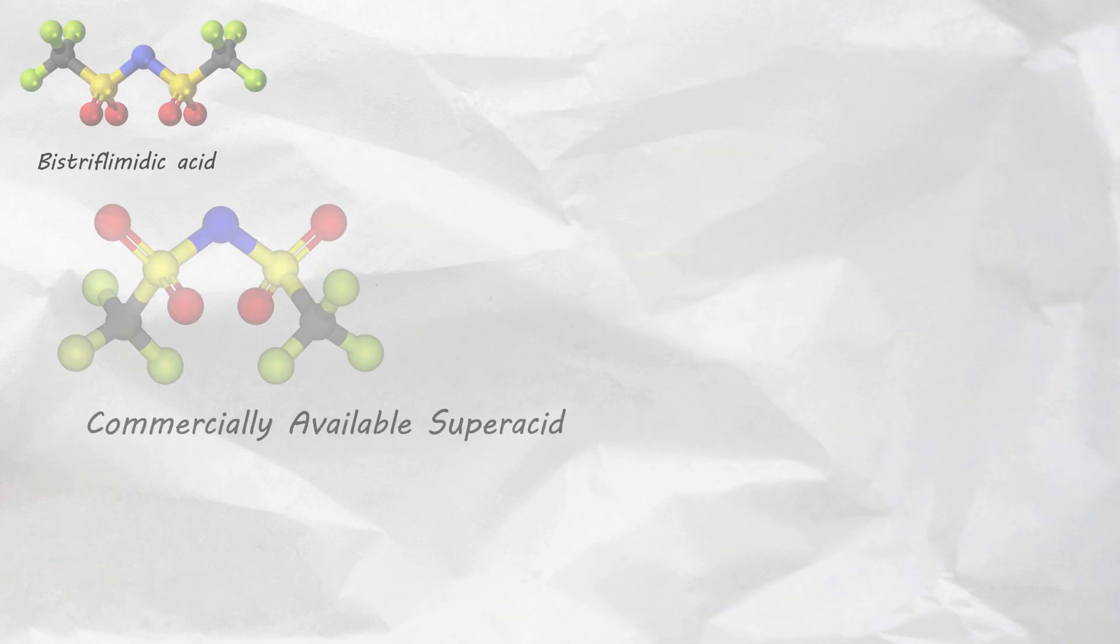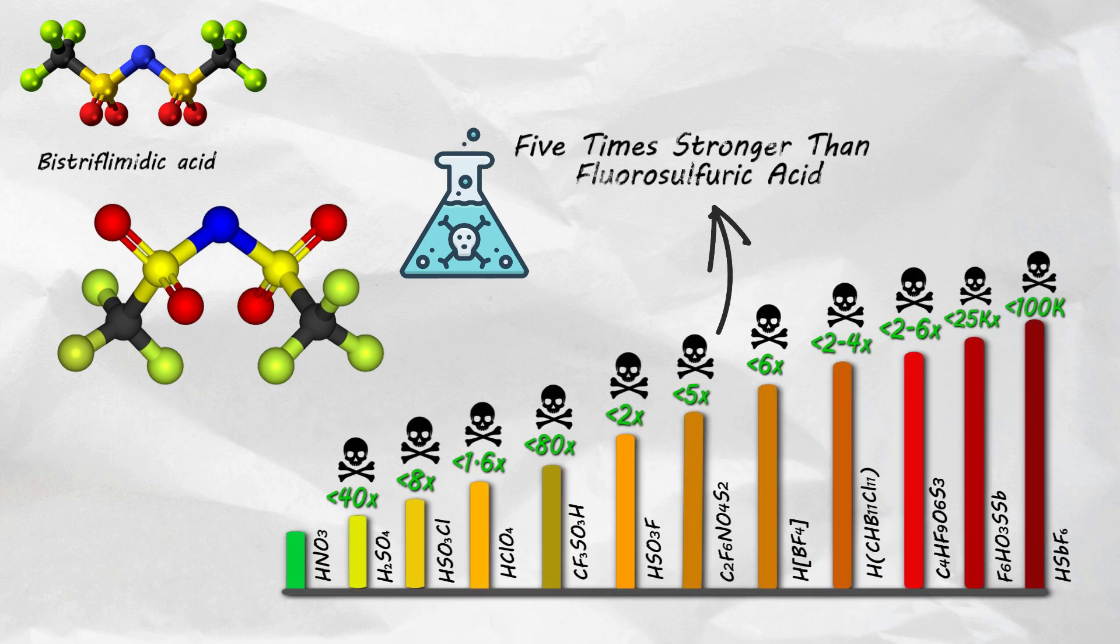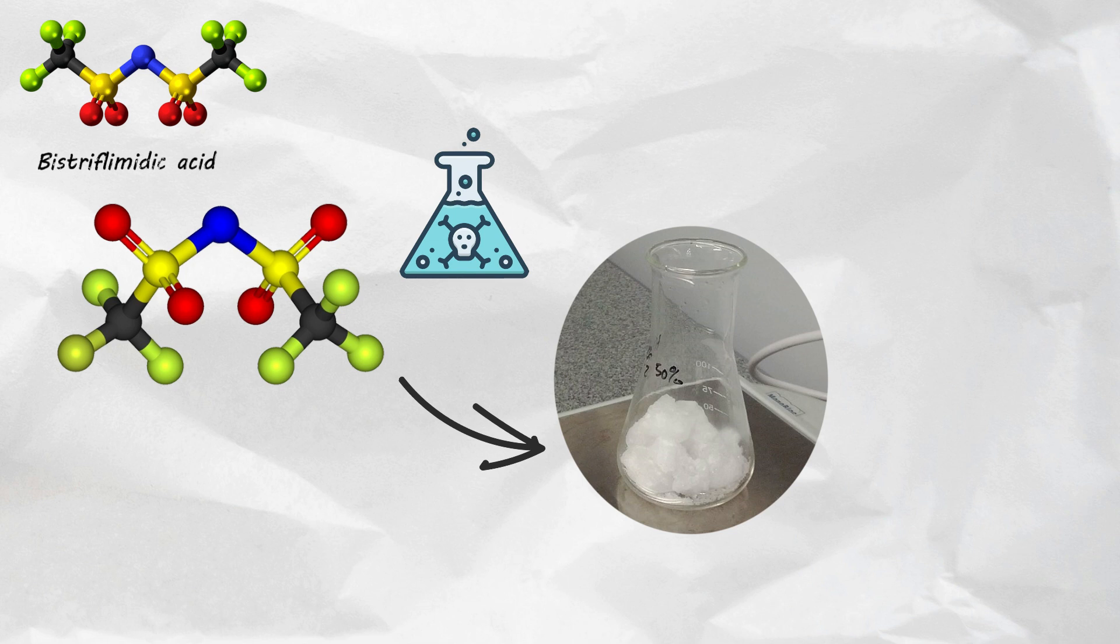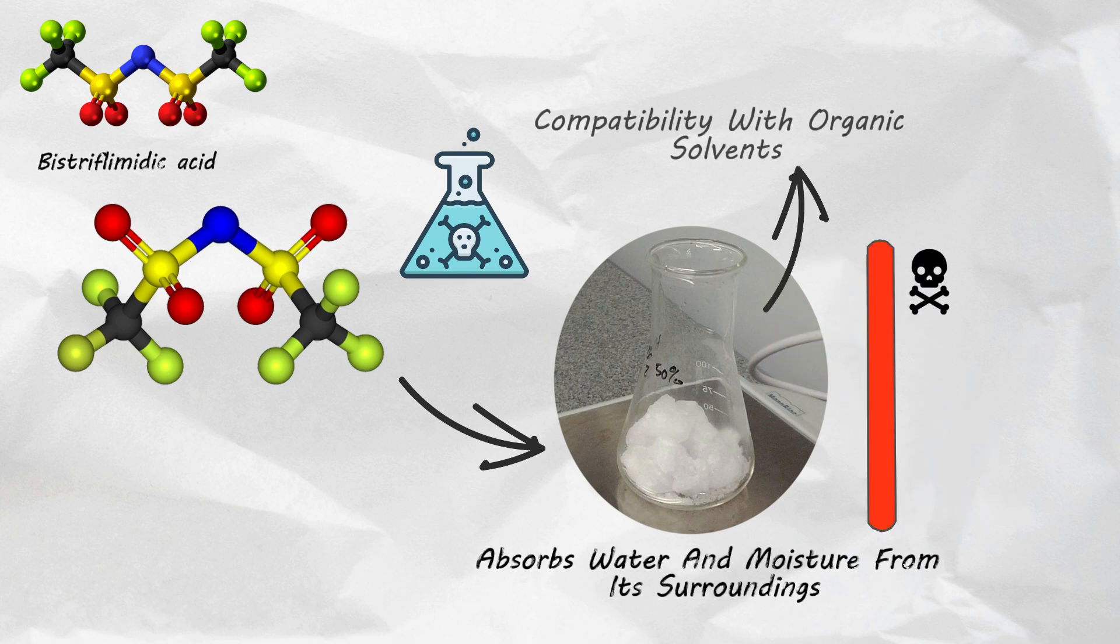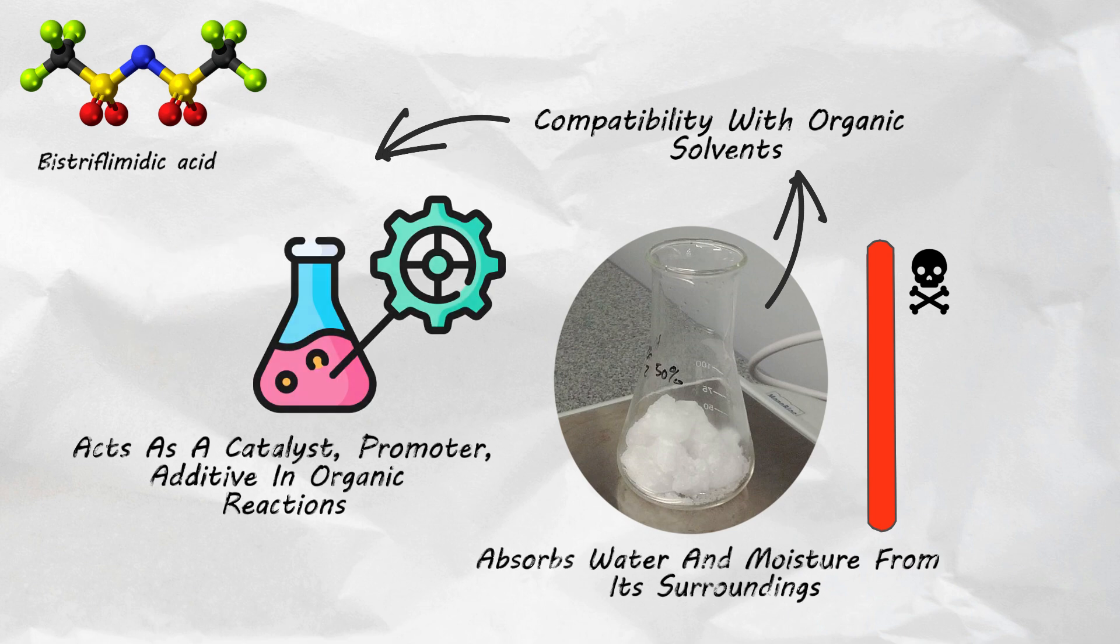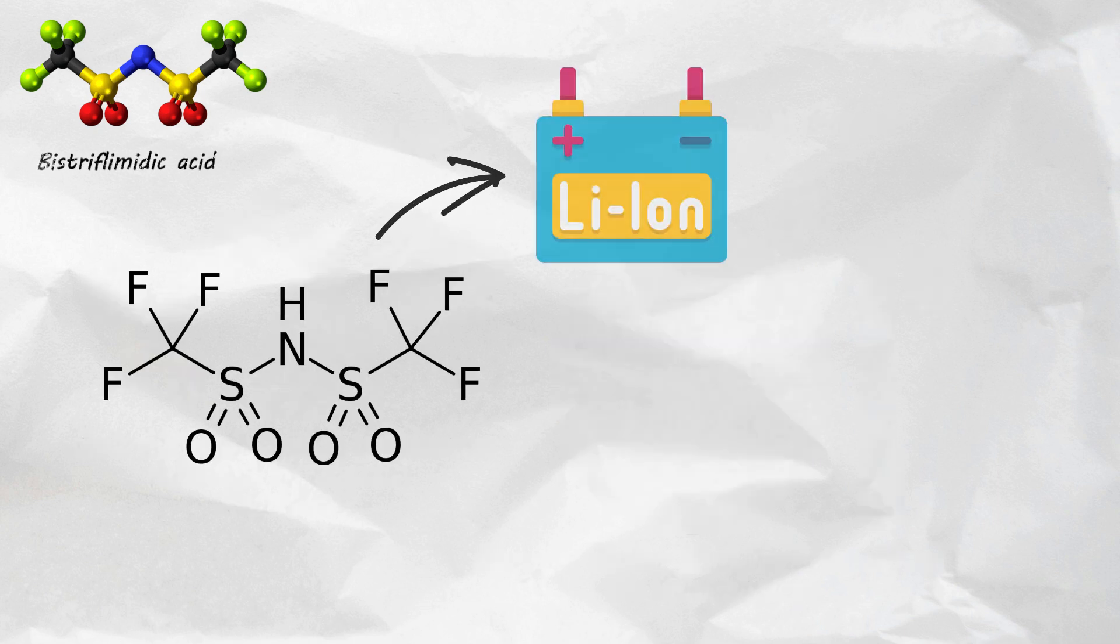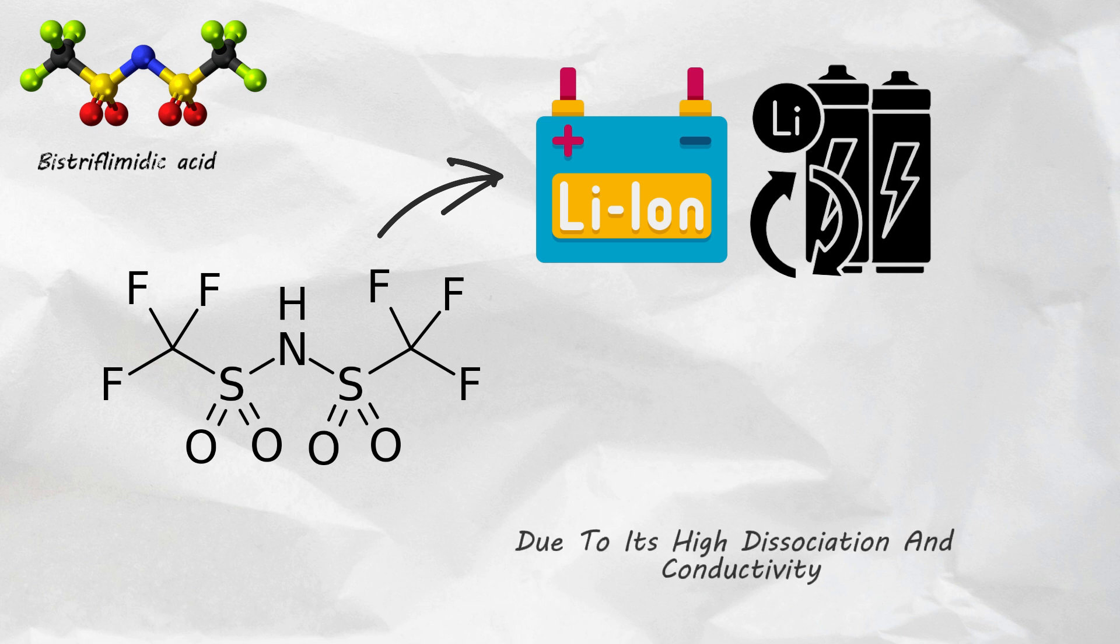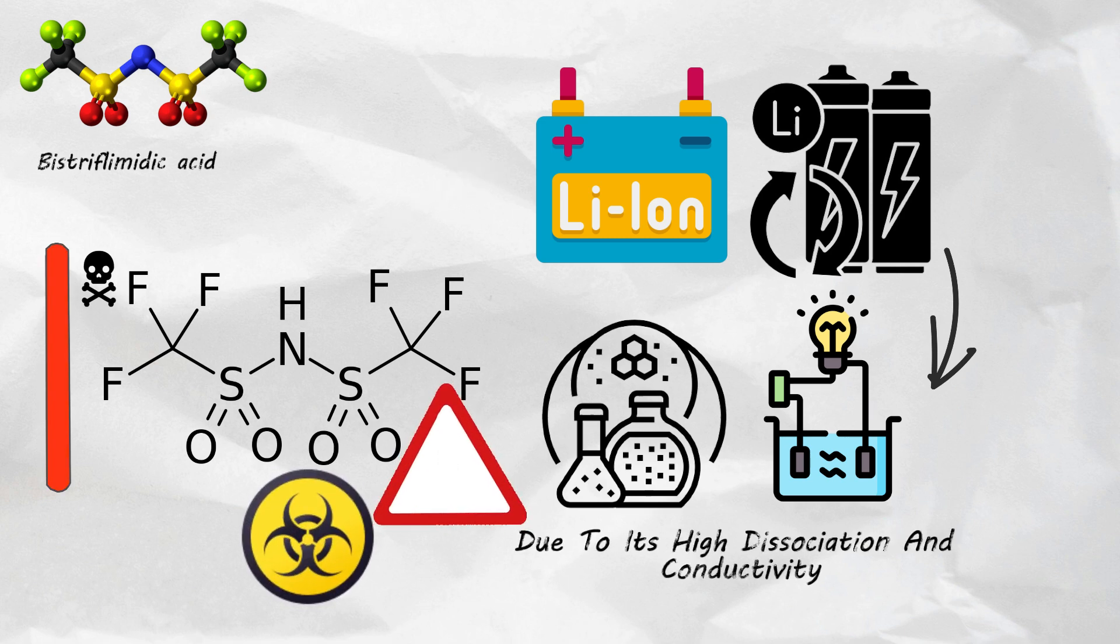Bistriflimidic acid is another commercially available superacid and approximately five times stronger than fluorosulfuric acid. Initially crystalline, it readily absorbs water and moisture from its surroundings. With its remarkably high acidity and compatibility with organic solvents, it serves as a catalyst, promoter or additive in diverse organic reactions. Additionally, it plays a significant role in lithium-ion and lithium-metal batteries due to its high dissociation and conductivity. Needless to say that this acid is highly corrosive, toxic and very dangerous for humans.